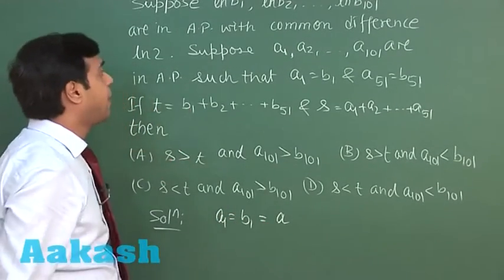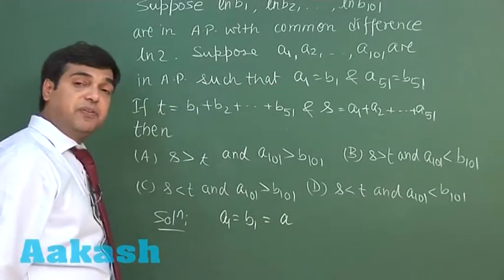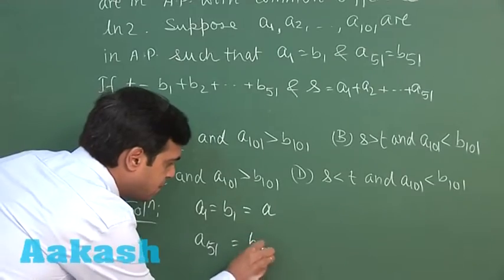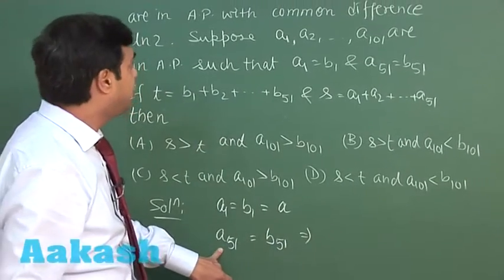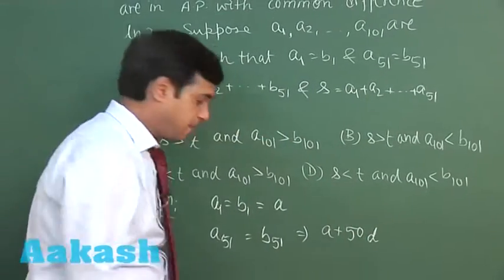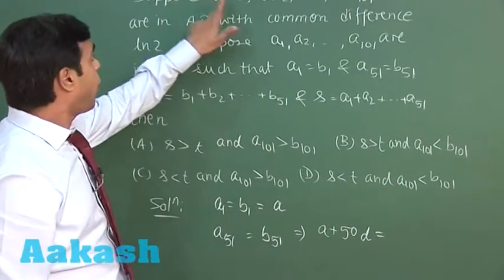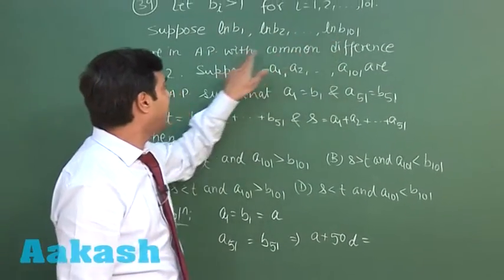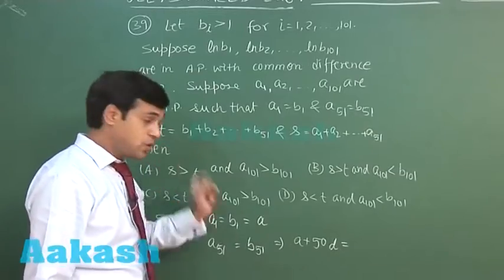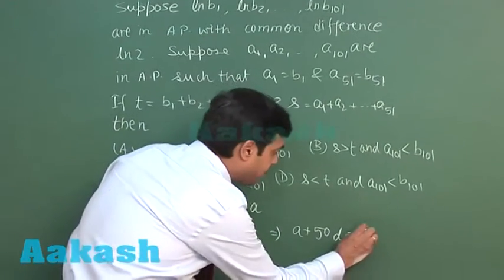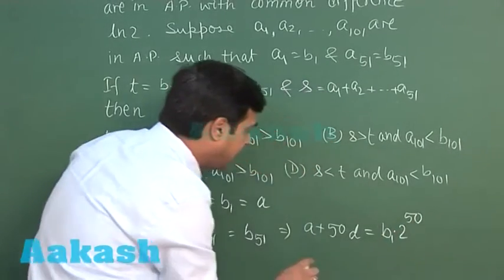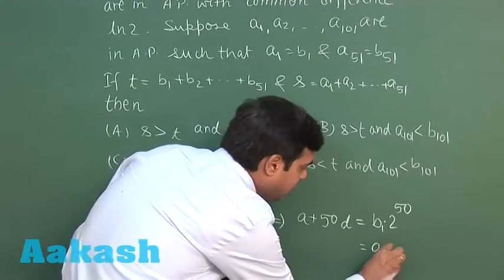Let a1 = b1 = a. Now a51 = b51 is given, meaning a + 50d (where d is the common difference). Since log(b1), log(b2), etc. are in AP, clearly b1, b2, b3 are in GP with common ratio 2. So b51 = b1 × 2^50, meaning b51 = a × 2^50.